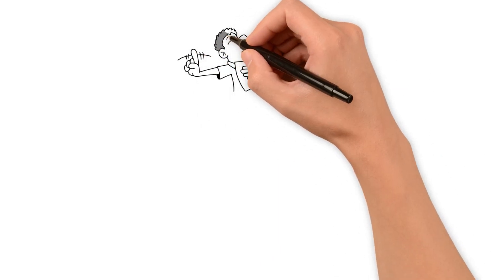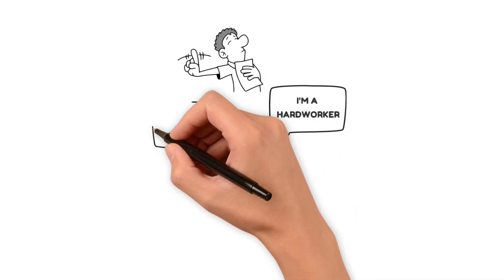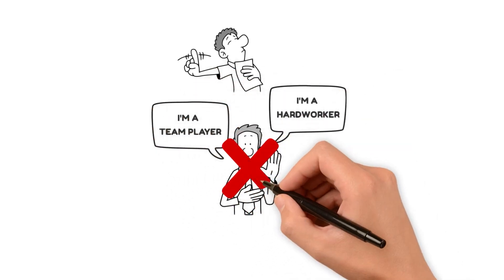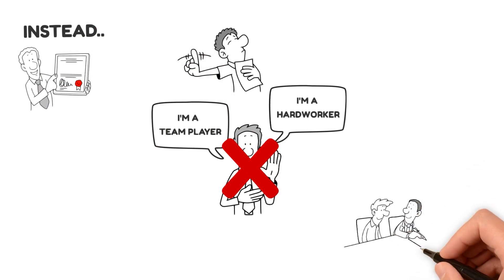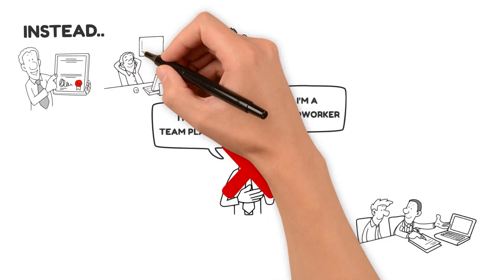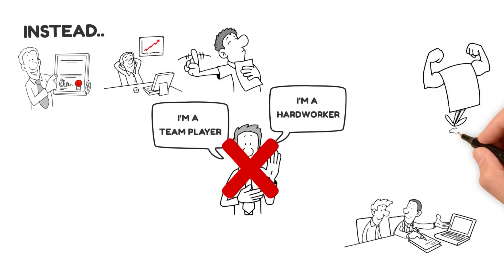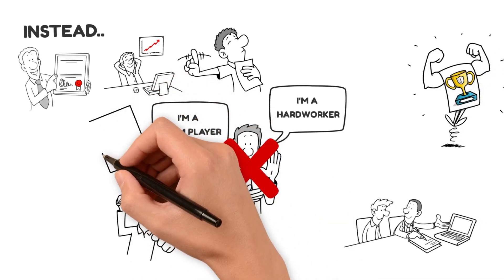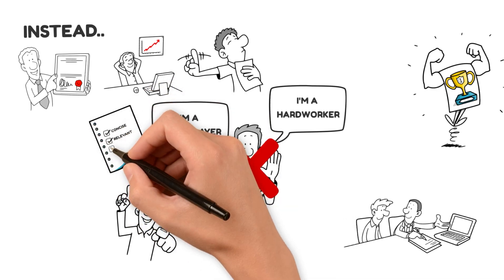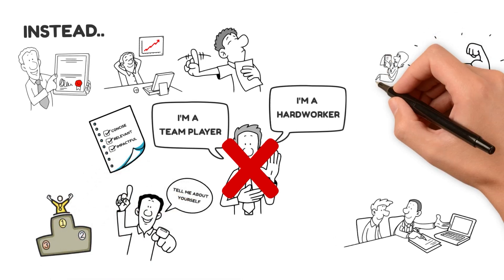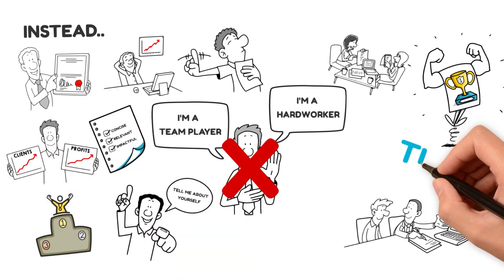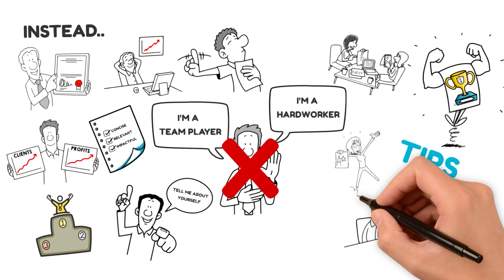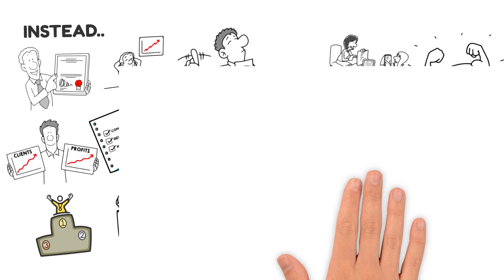Lastly, don't be too vague or generic. Saying things like 'I'm a hard worker' or 'I'm a team player' won't make you stand out from the crowd. Instead, provide specific examples that demonstrate your skills and accomplishments. Share stories of how you successfully tackled challenges or contributed to previous projects. Show them that you're not just making empty claims, but that you have the track record to back it up. So, when faced with a tell-me-about-yourself question, remember to keep it concise, relevant, and impactful. Highlight your professional experiences, avoid oversharing personal information, and provide specific examples that showcase your skills and achievements. With these tips in your arsenal, you'll be ready to impress any interviewer and set yourself apart from the competition.